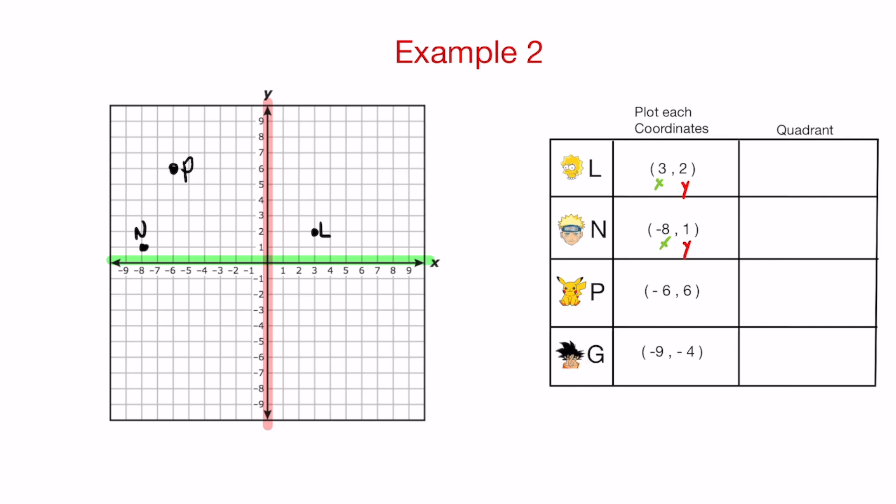The last point, my man Goku. Negative nine, negative four. Start at the center. The first number, negative nine, tells me to go nine spaces to the left because it's negative. Negative four on the y-axis is somewhere at the bottom. Four spaces. Count four spaces. One, two, three, four. That is where you're going to mark that target to represent Goku. G for Goku.